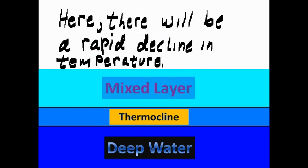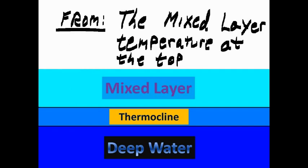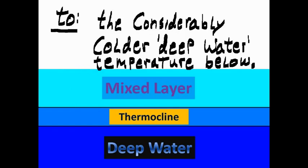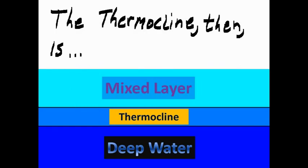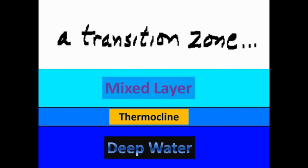Here, there will be a rapid decline in temperature from the mixed layer temperature at the top to the considerably colder deep water temperature below. The thermocline, then, is a transition zone.